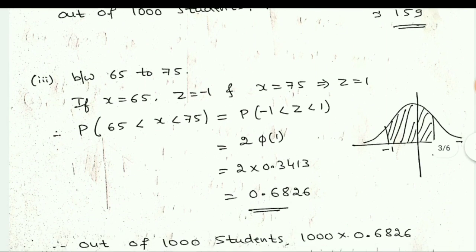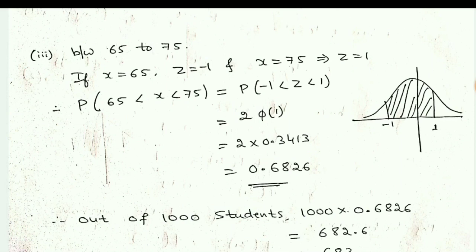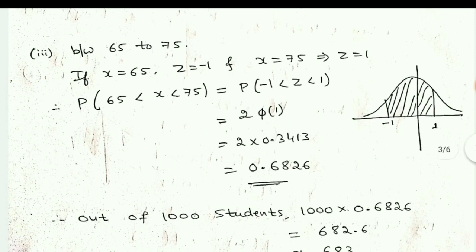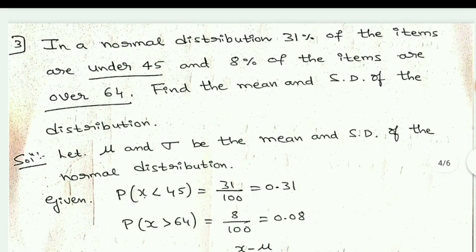Third question: marks between 65 and 75. Substituting x = 65 gives z = −1 and x = 75 gives z = 1. So P(65 < x < 75) = P(−1 < z < 1). By symmetry, this equals 2 × φ(1) = 2 × 0.3413 = 0.6826. Multiplying by 1000 gives 683 students scoring between 65 and 75.